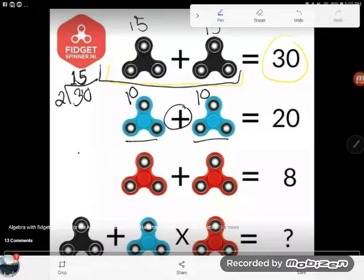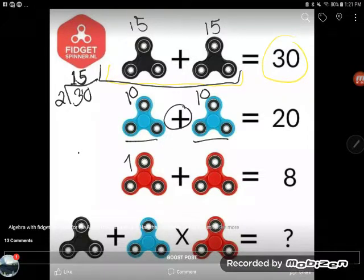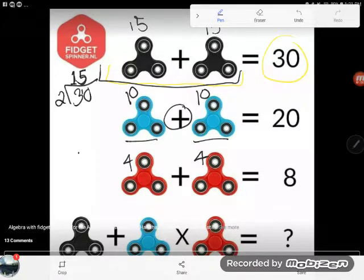Same thing for the next one. My red fidget spinners. Well if two of them together equal up to 8 then it must be 8 divided by 2. These must be 4 each. 4 plus 4 is indeed 8. Great.